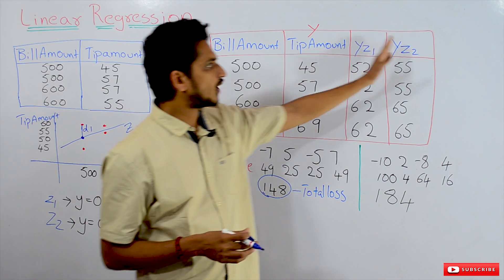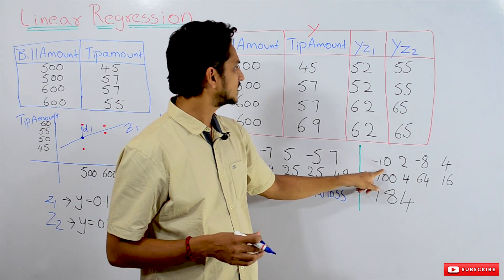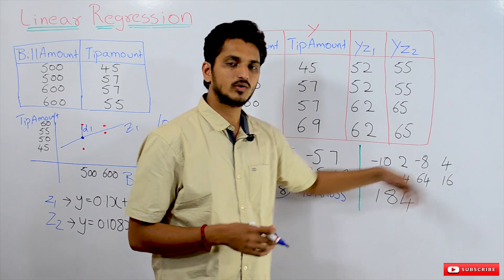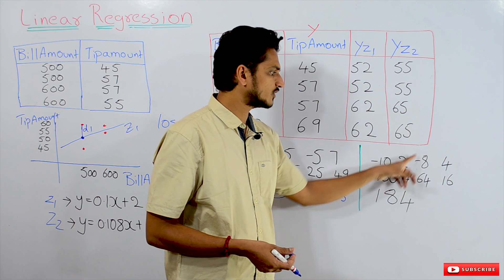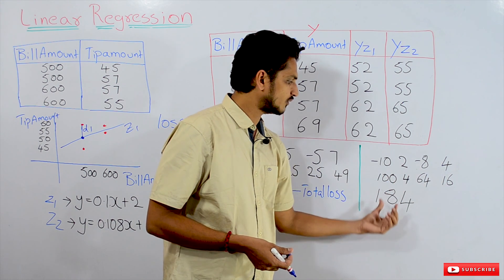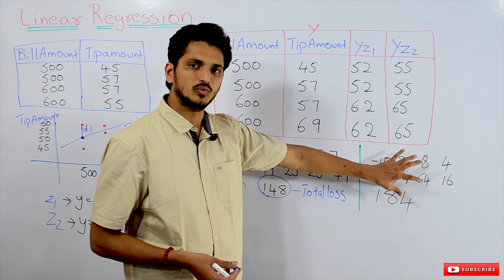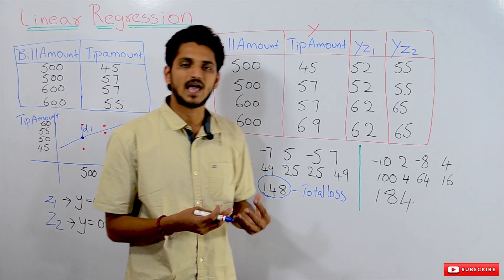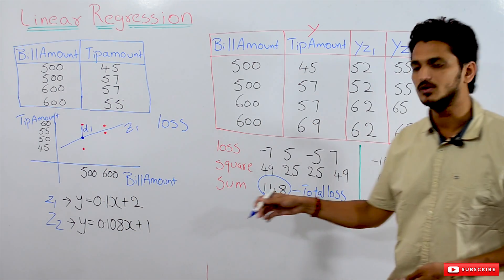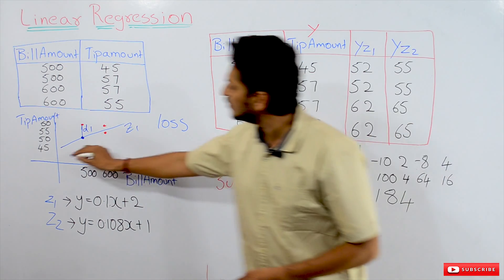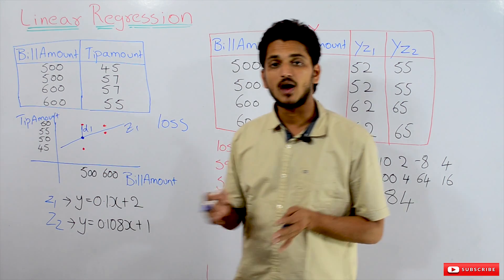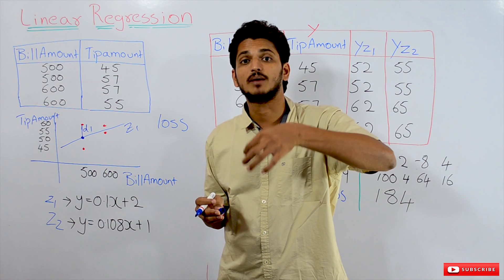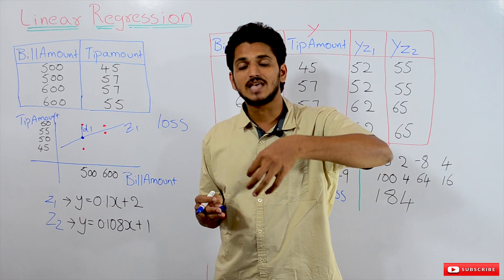Repeating this for Z2: 45 − 55 = −10; 57 − 55 = 2; 57 − 65 = −8; 69 − 65 = 4. Square them: 100, 4, 64, 16. Sum: 184. The loss for Z2 is 184 and for Z1 is 148. The minimum is 148, so Z1 is the better line. From the thousands of lines passing through the data, we identify the line with the minimum loss — that is the best line.